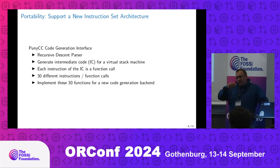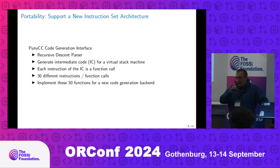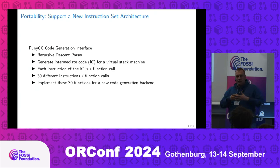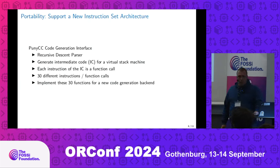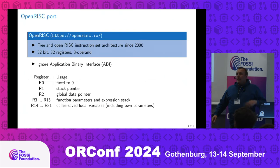I don't generate intermediate code and then translate it to assembly and then compile. What I do is I call functions — the output of the compiler is a stream of function calls, and you have to implement those functions to write the compiled binary output. It's not so difficult — there are only 30 different functions, and that's about 400 lines per backend. Therefore I want to show you how to use OpenRISC.